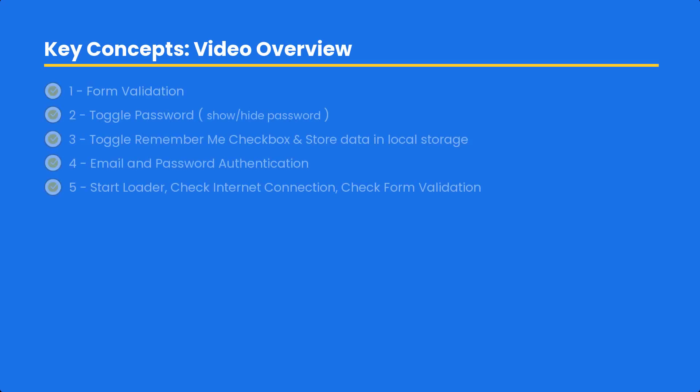Let's focus on today's tutorial. First we are going to learn how to get the form validation — we will try to add validation in the form. Then we'll see how we can toggle the remember me and also toggle the password so we can see or hide the password. Remember me is going to get the email and password and store it inside the local storage, and also when the application is launched or the login screen appears we will fetch that specific data and display it on the screen. Then we are going to trigger the email and password authentication — we will first add a loader, then check the internet connection, check the form validation, and if the form is validated we are going to pass the data to the authentication repository where we will create our login with email and password function.